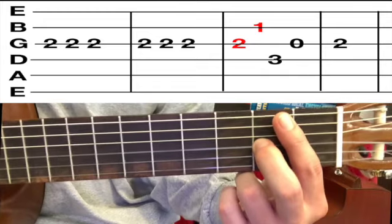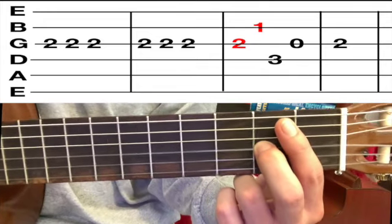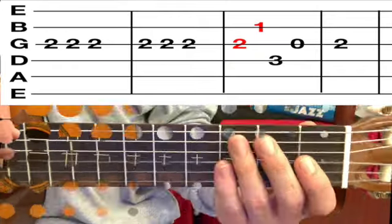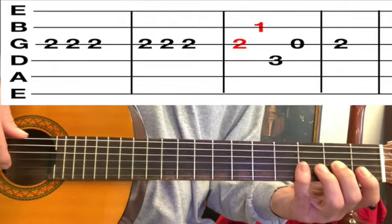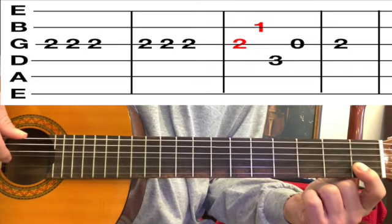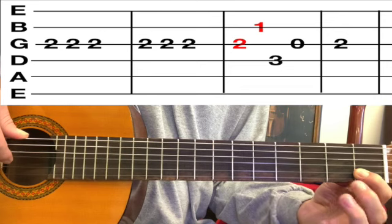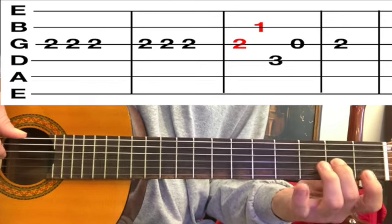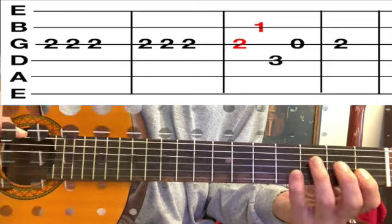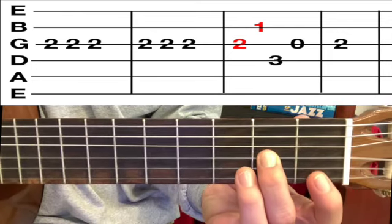The next motive starts with that same note. The next note we play after that is the first fret B string. So the two notes sound like this: second fret G string, first fret B string.